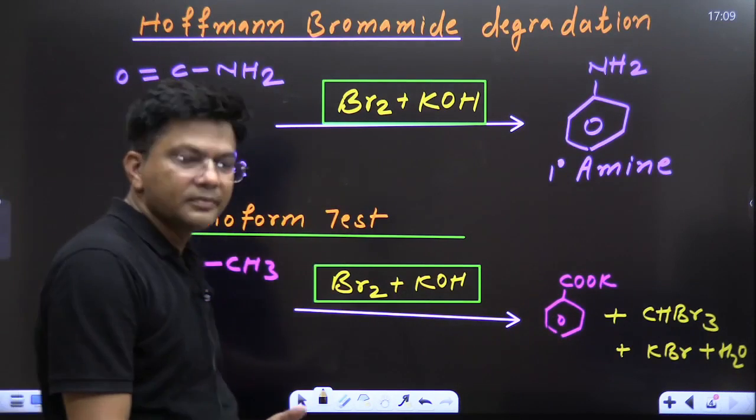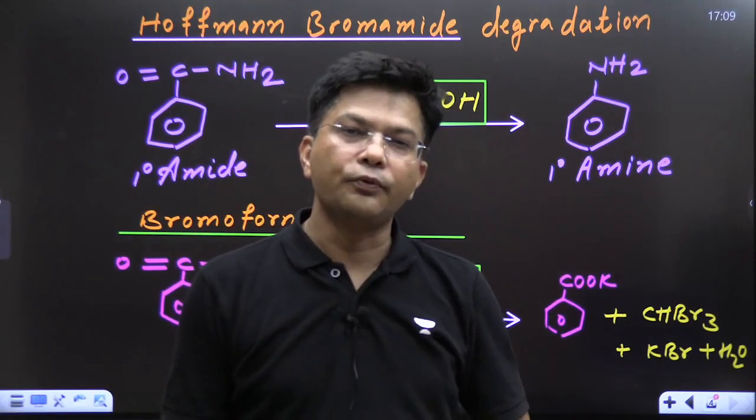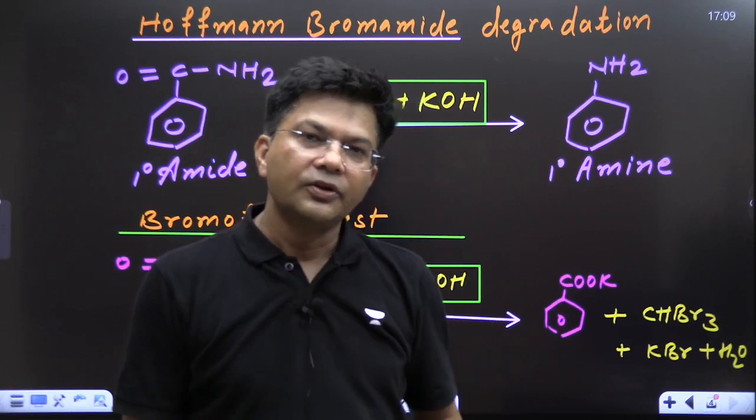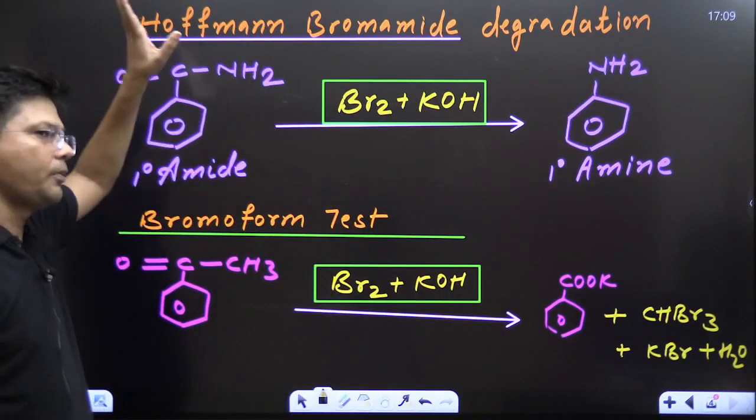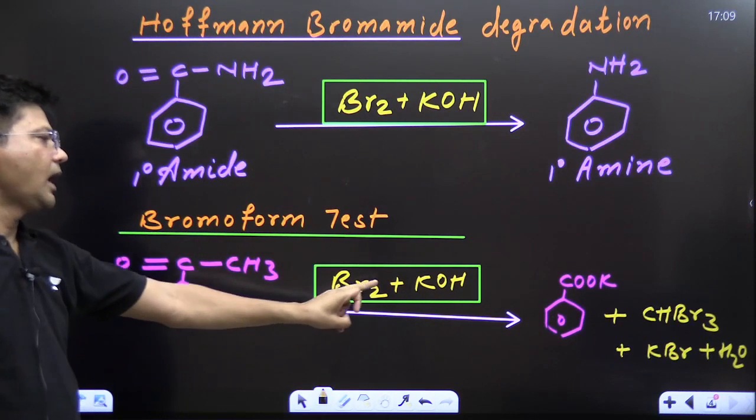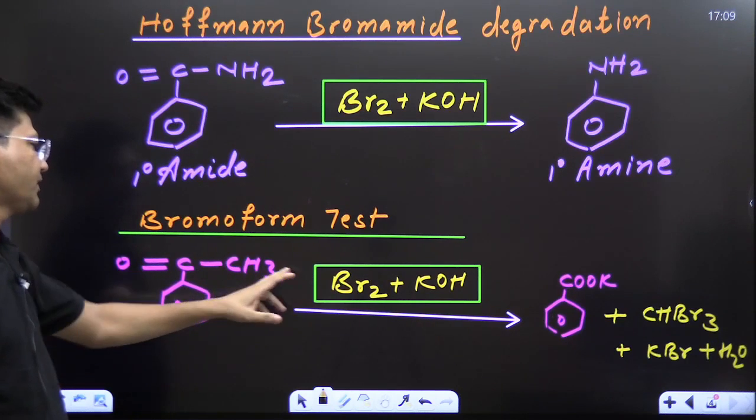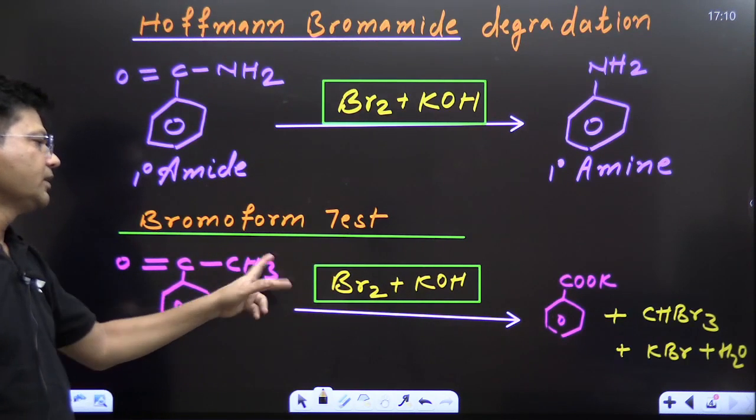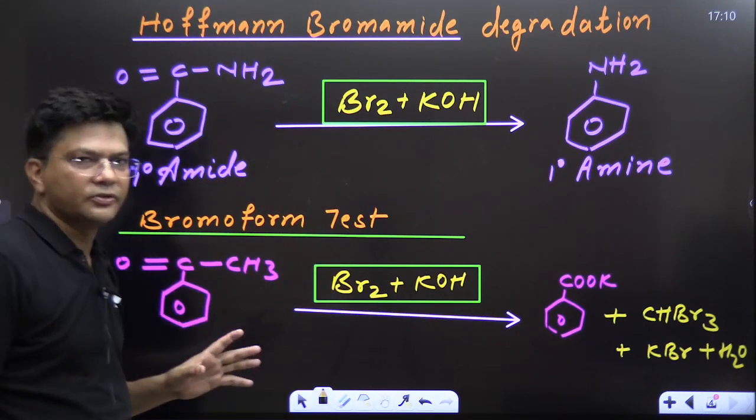Bromoform test, you can say haloform test: chloroform, bromoform, iodoform test. So just remember CONH₂ then Hoffmann bromamide degradation, COCH₃ then haloform test that is going to form CHBr₃. If I₂ and KOH is given then CHI₃ yellow color precipitate, otherwise bromoform.